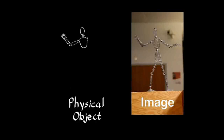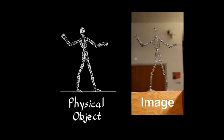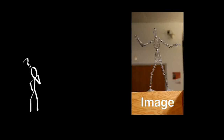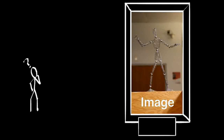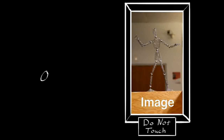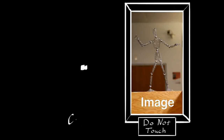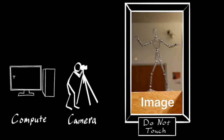We learn a lot about objects by manipulating them — poking, pushing, prodding — and then seeing how they react. We obviously can do that with videos. Just try touching that cat video on your phone and see what happens.